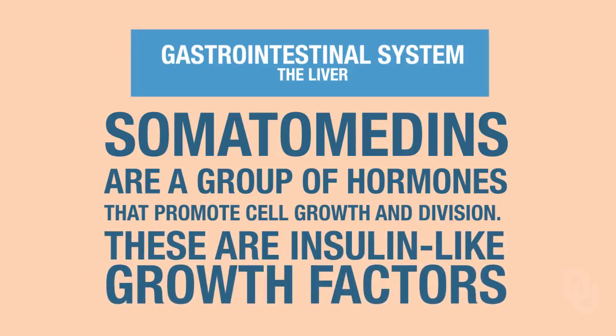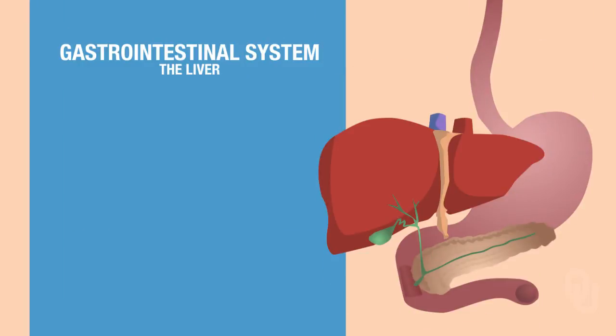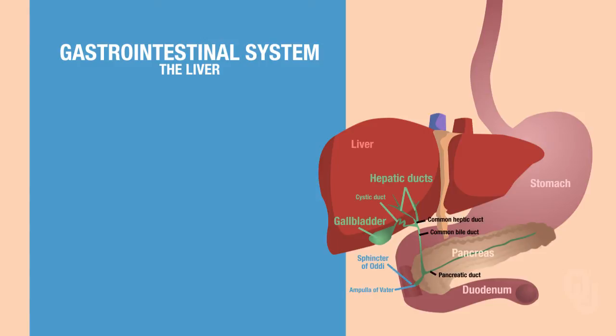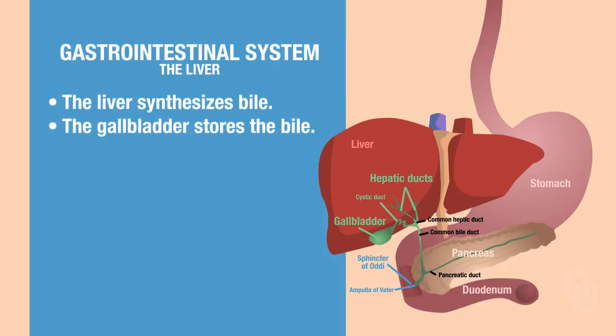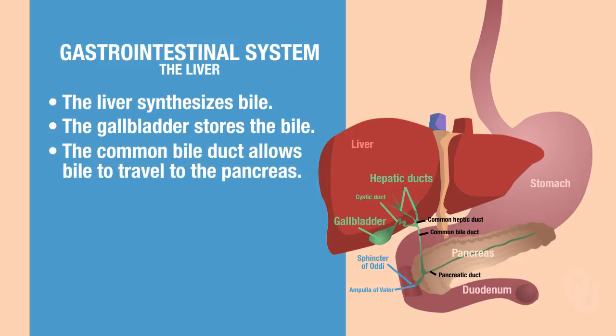Let's connect the liver to the gallbladder and the associated ducts and how this fits in with the major organs of the gastrointestinal system. The liver synthesizes bile, and the gallbladder stores the bile. In terms of how bile gets down to the duodenum, we have the common bile duct connected to the gallbladder, then the ampulla of Vater and the sphincter of Oddi, and then the duodenum.